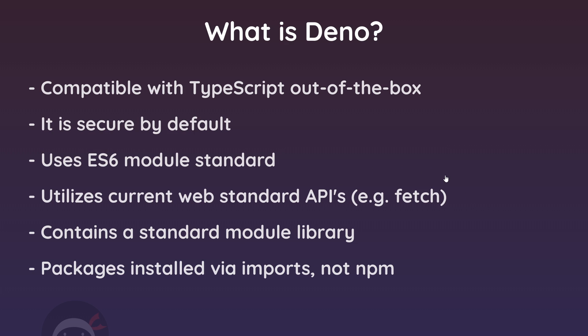In addition, Dino brings an official standard library — a bunch of commonly used modules or packages maintained by Dino themselves, not third parties who could bin the module at any time. These modules are guaranteed to work with Dino and will be actively maintained by the Dino team. Speaking of packages, they are not installed via npm and there's no package.json file either. Package management is decentralized, meaning we can install packages hosted anywhere on the web using import statements in our code, which downloads and caches them without bundling them into a node_modules folder.